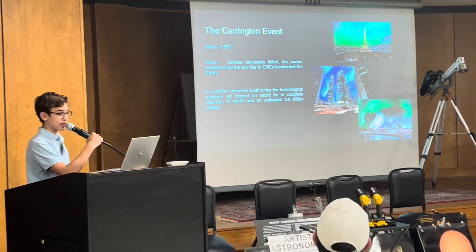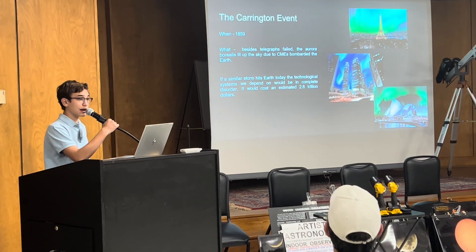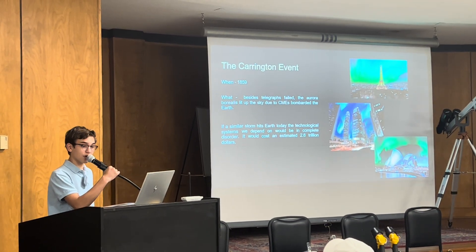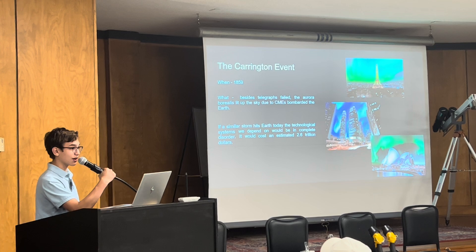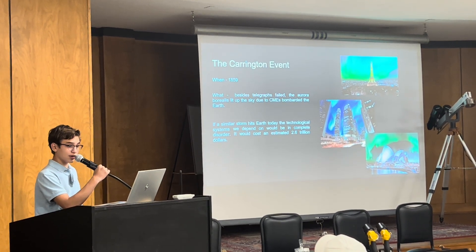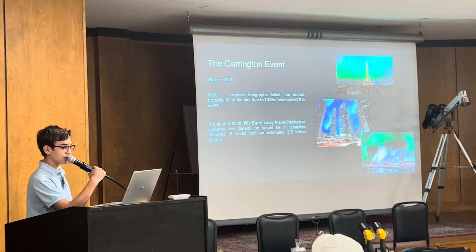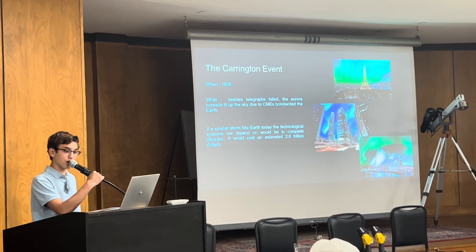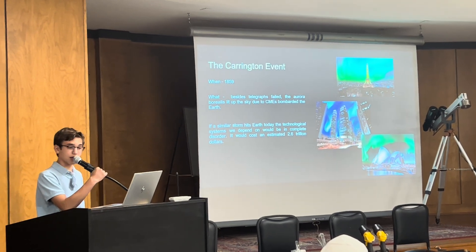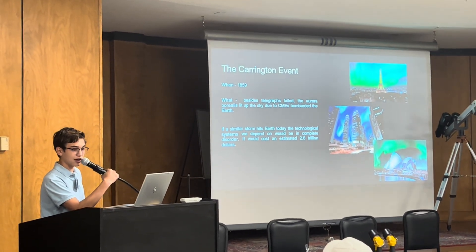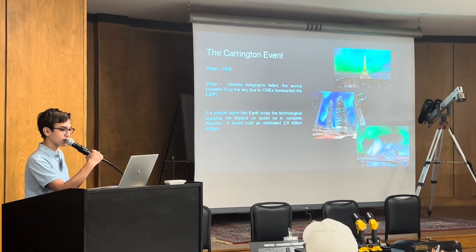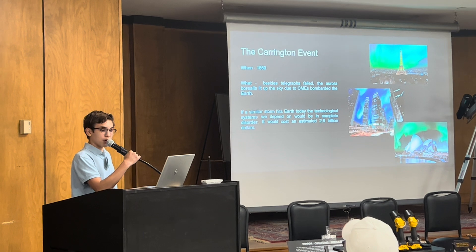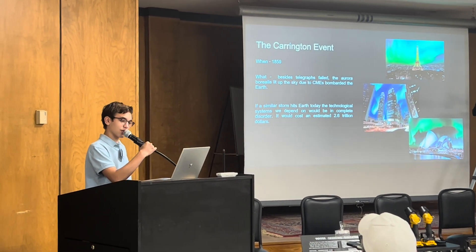The Carrington Event happened in 1859 when a massive coronal mass ejection hit Earth. There were even reports of operators receiving electric shocks and sparks showering from telegraph machines, setting papers ablaze. In 1989, a coronal mass ejection accompanied by a solar flare hit Earth, plunging the entire province of Quebec, Canada into an electrical blackout that lasted 12 hours. The event cost Quebec's utility company, Hydro-Québec, at least $10 million in damages.